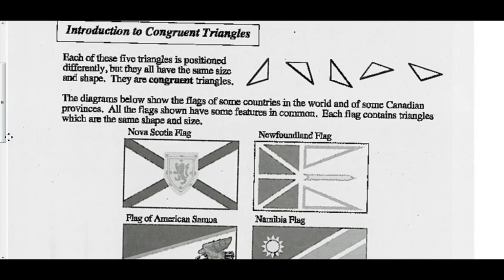Each of these five triangles are positioned differently, but they all have the same size and shape, and we call these congruent triangles. Same size, same shape.